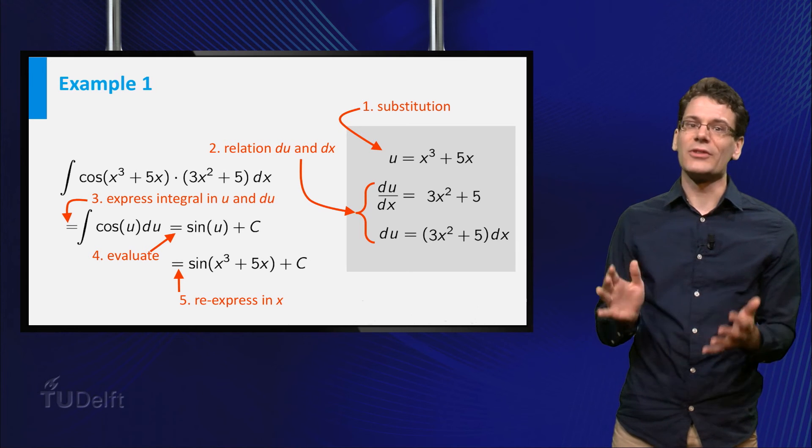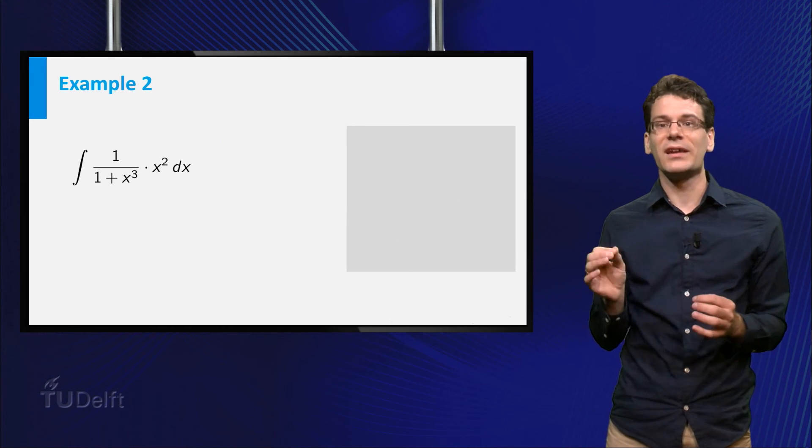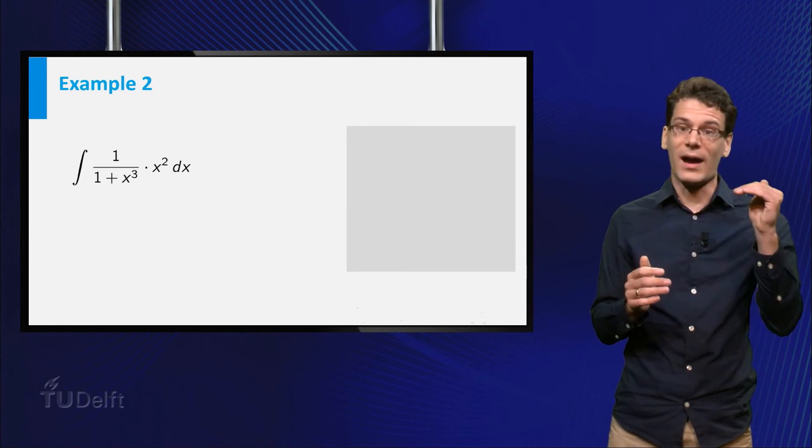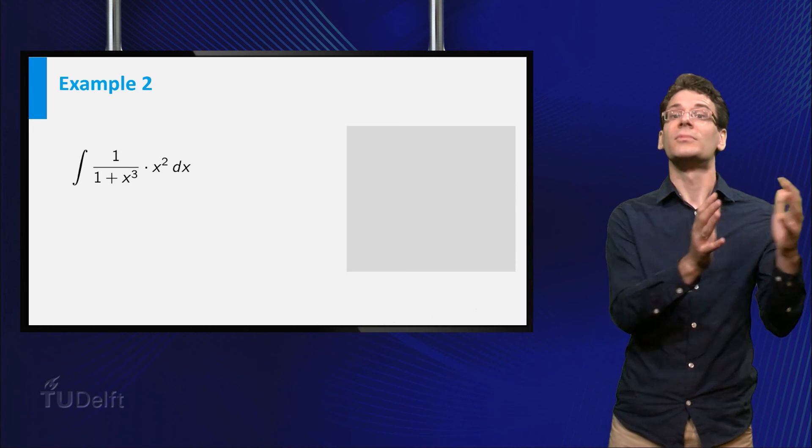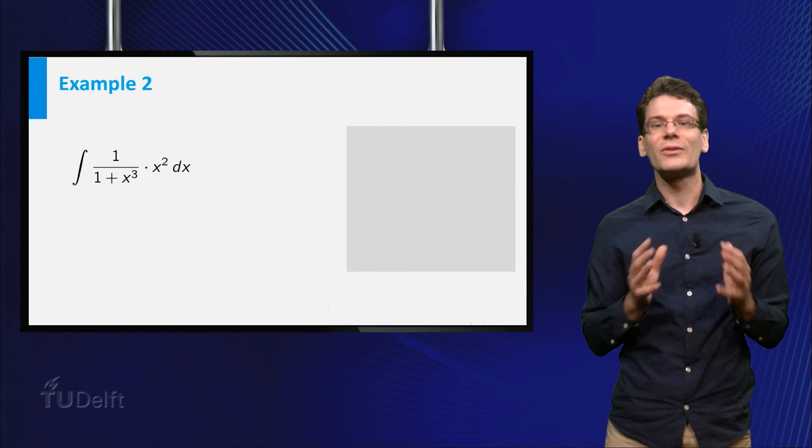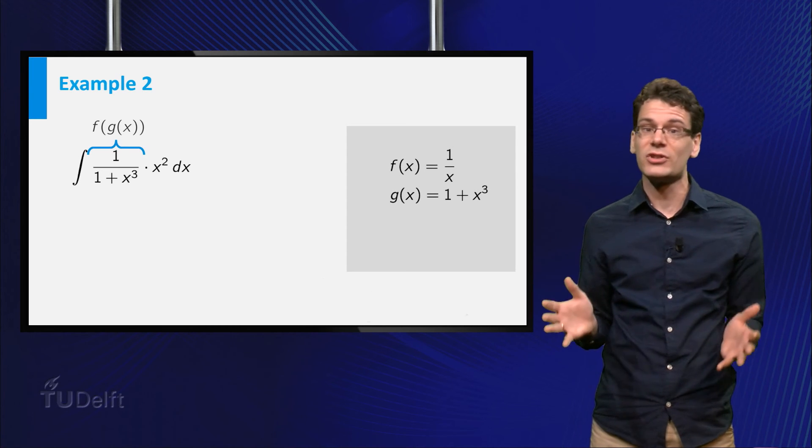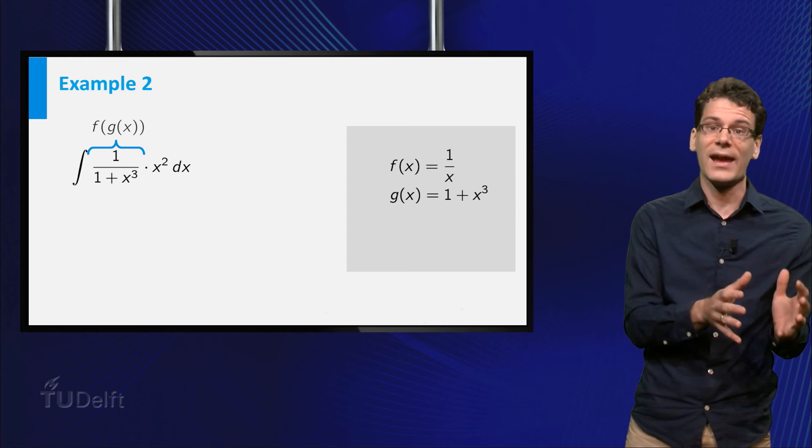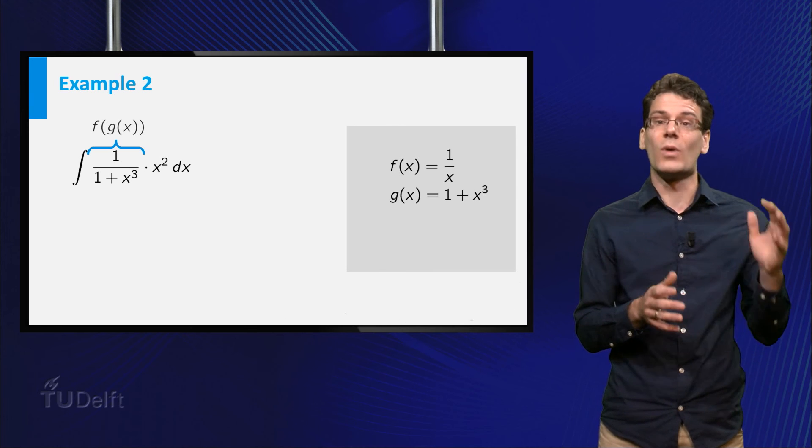Let me give you another example to illustrate the steps. Consider the integral of 1 divided by 1 plus x cubed times x squared dx. You can see that the first factor is a composition of f(x) equal to 1 over x and g(x) equal to 1 plus x cubed.